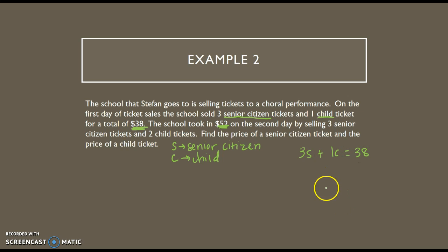Then the other one is $52. So we could say three senior citizen plus two child equals $52. And now I can solve any way I want.